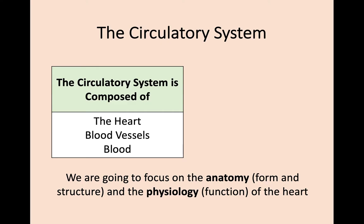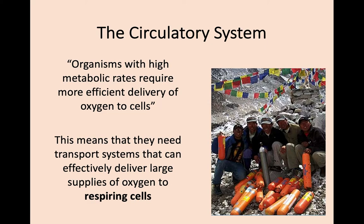The circulatory system is composed of the heart, the blood, and the blood vessels. If you don't remember from National 5, it would be good to review the transport and animals key area. From here we're going to focus on the anatomy and physiology of the heart. Organisms with high metabolic rates require more efficient delivery of oxygen to cells, meaning you need an effective, more complex transport system to deliver large supplies of oxygen to respiring cells.